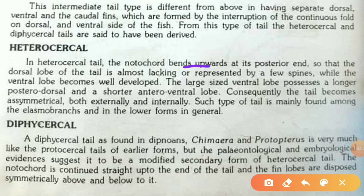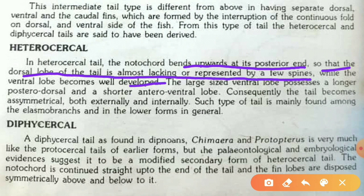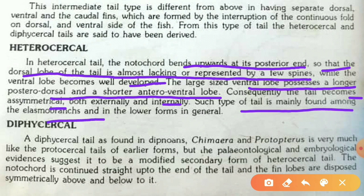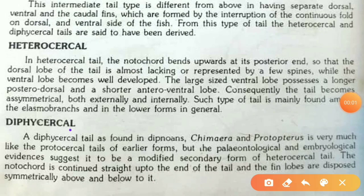In the heterocercal tail, the notochord bends upwards at its posterior end so that the dorsal lobe is almost lacking or represented by a few spines, while the ventral lobe becomes well developed. The larger ventral lobe possesses a longer posterior dorsal and shorter anterior ventral portion, making the tail asymmetrical both externally and internally. This type of tail is mainly found among the elasmobranchs and lower forms in general.